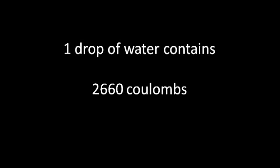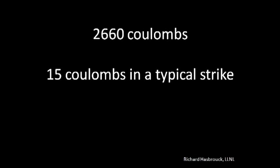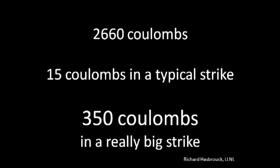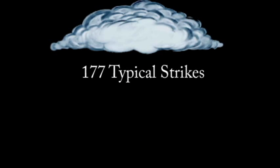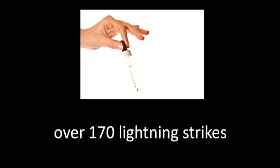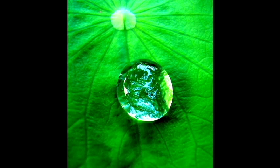In our discussion, we were talking about what would happen if you could magically take all the electrons out of that drop of water — how many lightning strikes could you make? A drop of water contains 2,660 coulombs. Richard Hasbrook's research tells us that there's about 15 coulombs in a typical lightning strike, but some of the biggest lightning strikes in the world transfer up to 350 coulombs. So if we divide 2,660 by 15, we find there are 177 typical lightning strikes in a drop of water. For the really big lightning strikes, it's only eight. Using the electrons found in one drop of water, you can make over 170 typical lightning strikes — and that's a lot of lightning for just a little drop of water.